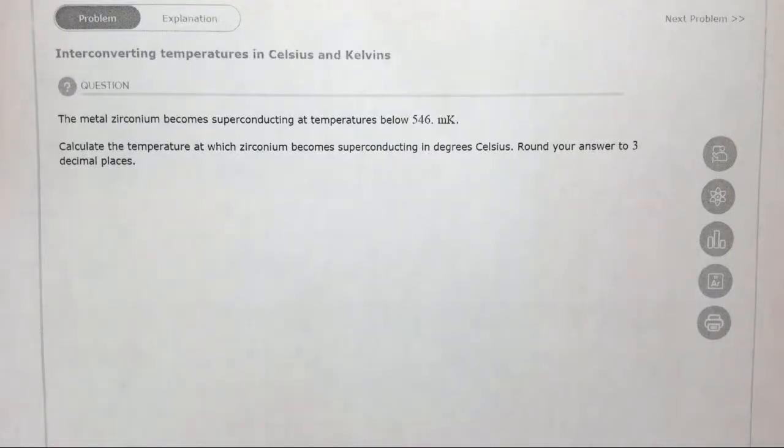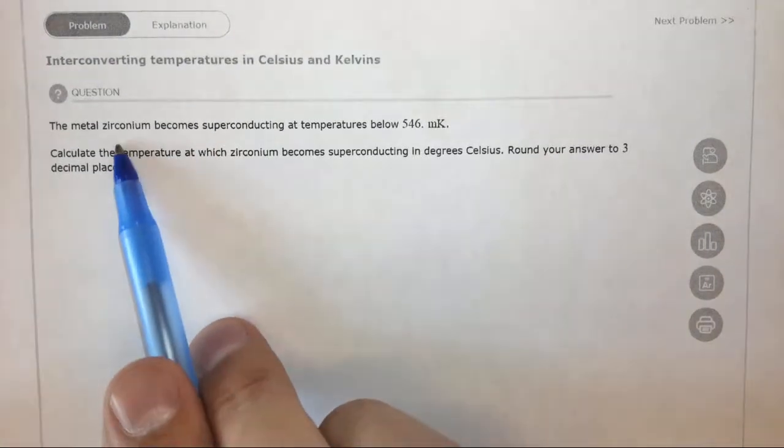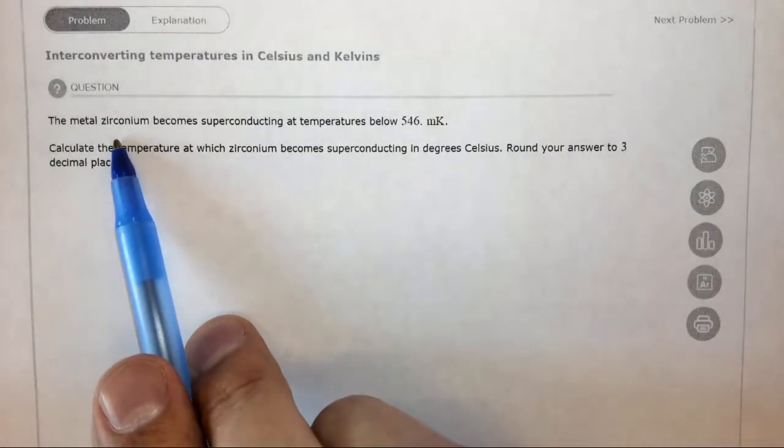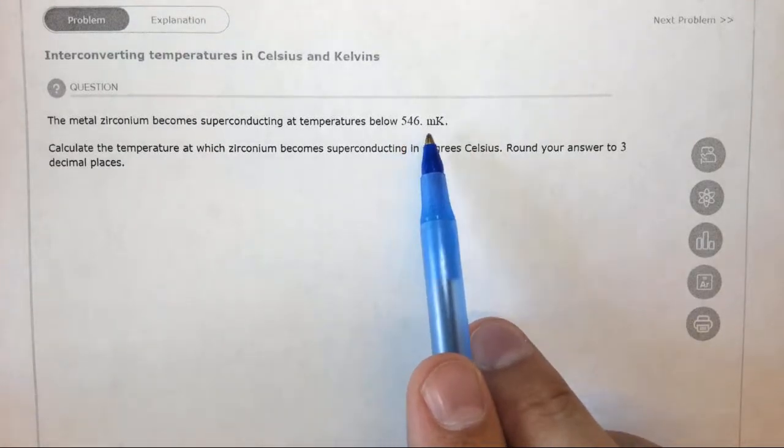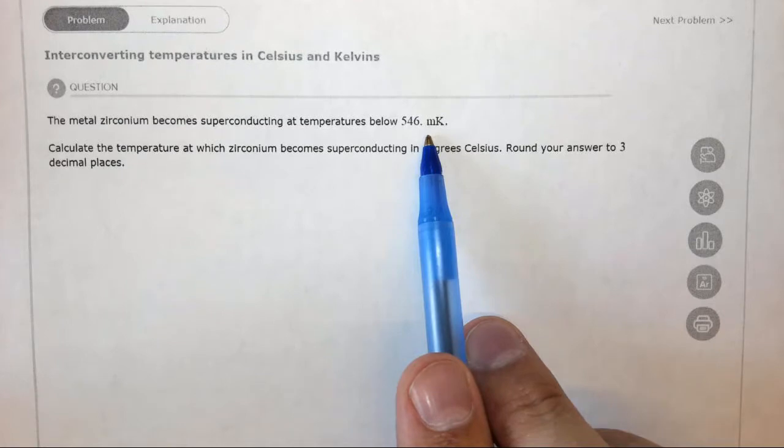In this question we're asked to find the temperature at which zirconium metal becomes superconducting in degrees Celsius. We're given that temperature in Kelvin is 546 millikelvin, so we're actually given it in millikelvin.